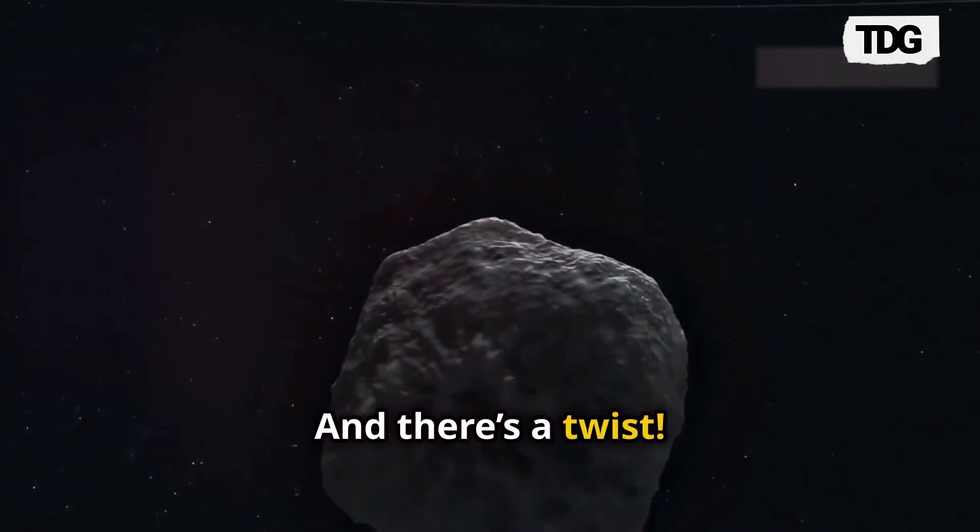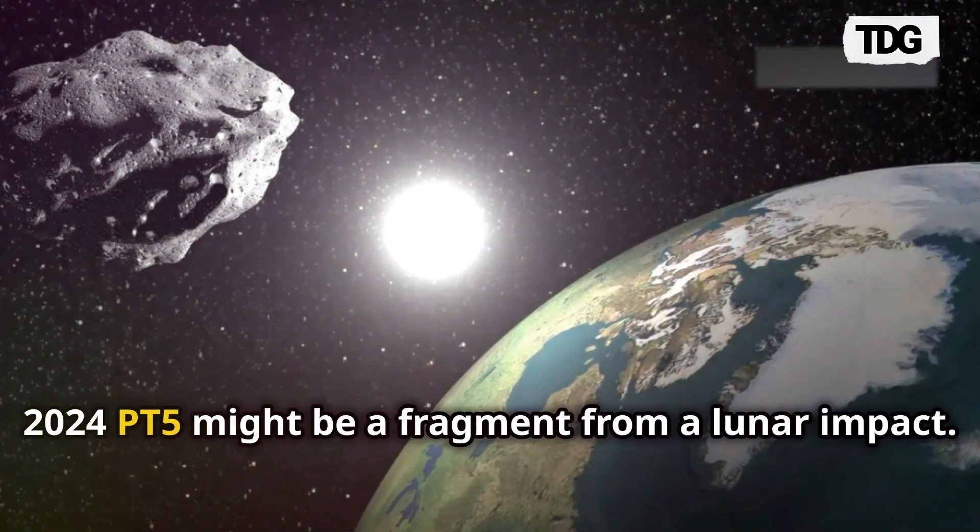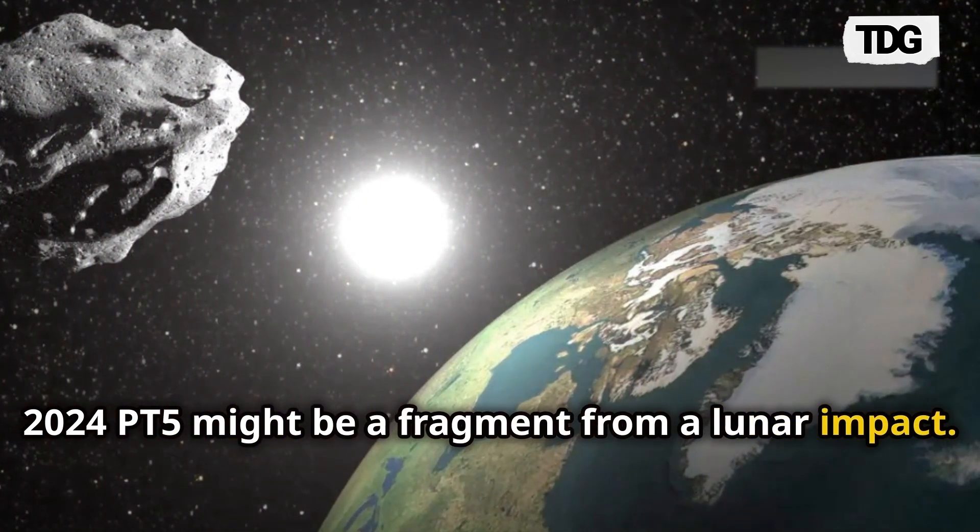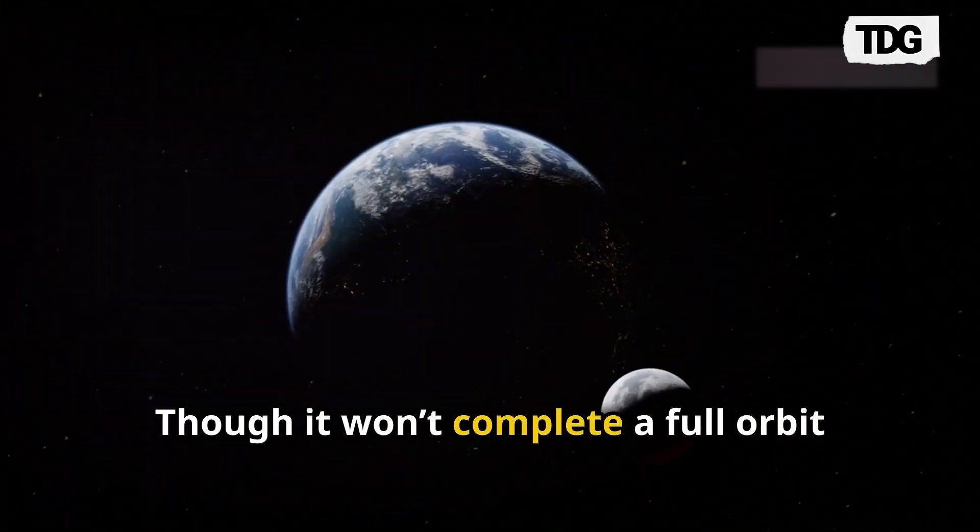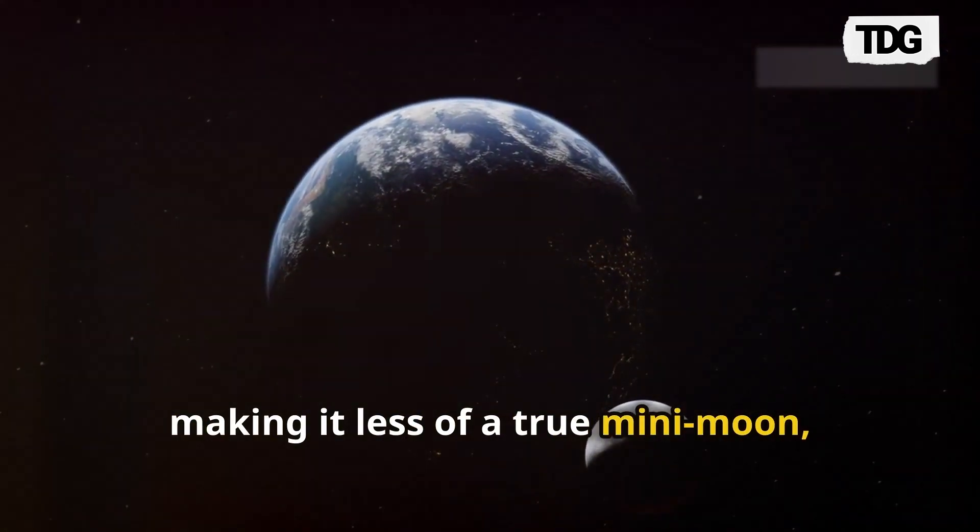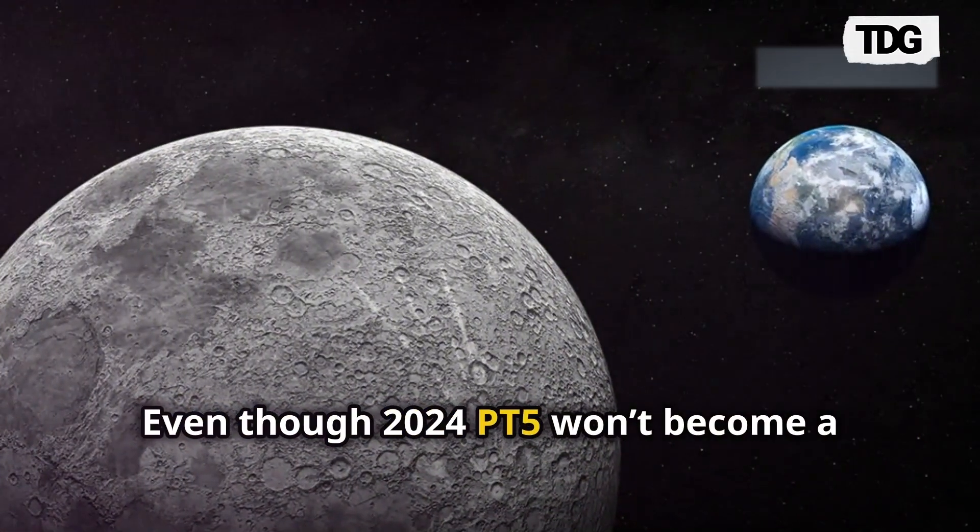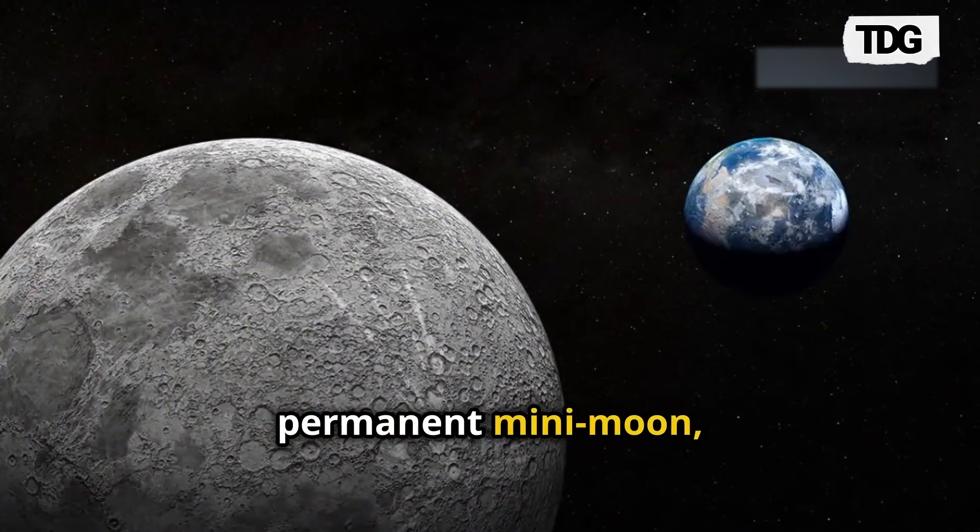And there's a twist. Paul Chodas from NASA has suggested that 2024 PT-5 might be a fragment from a lunar impact. Though it won't complete a full orbit around Earth, making it less of a true mini-moon, it still adds a fascinating dimension to its story.